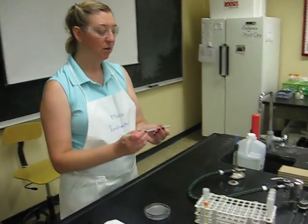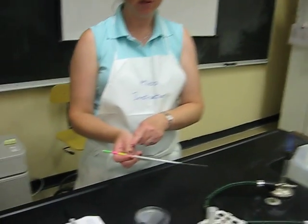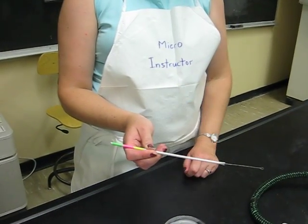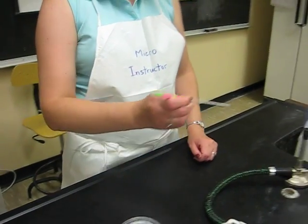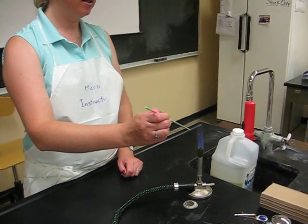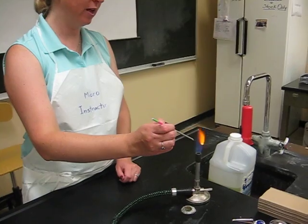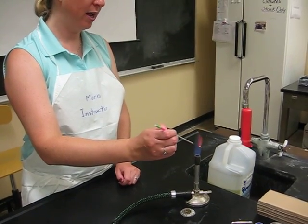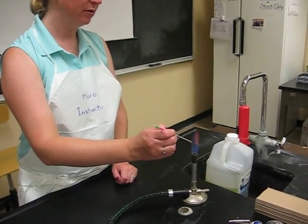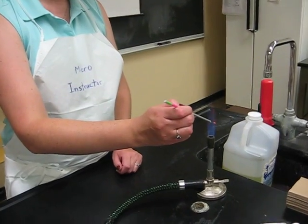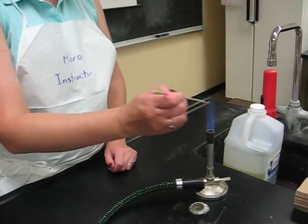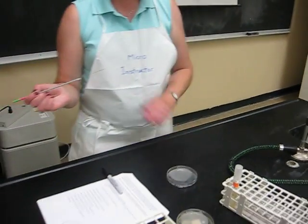Pick up my loop, hold it between thumb and index finger, and rest it on my middle finger. Flame until it's completely orange the entire loop, the hottest part of the flame, all the way to the handle. Give it a second to cool.